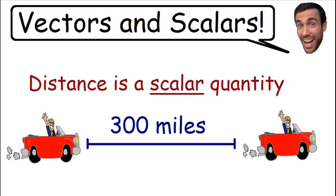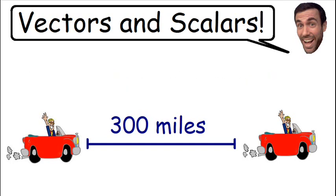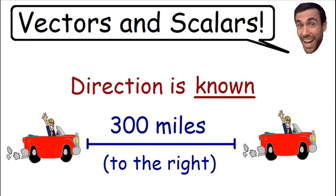But let's say for example the direction was given to us. So let's say we traveled 300 miles to the right. This is what we call displacement. Displacement is just another way of saying distance but with displacement the direction in which the object is moving must be given.